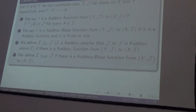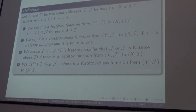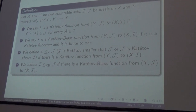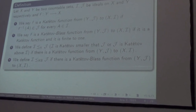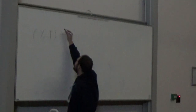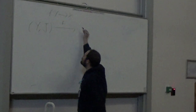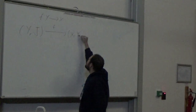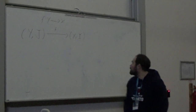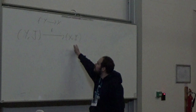We have X and Y, two countable sets, and I and J, ideals on X and Y. We say that a function from Y to X is a Katětov function if the preimage of every element in I is in J.